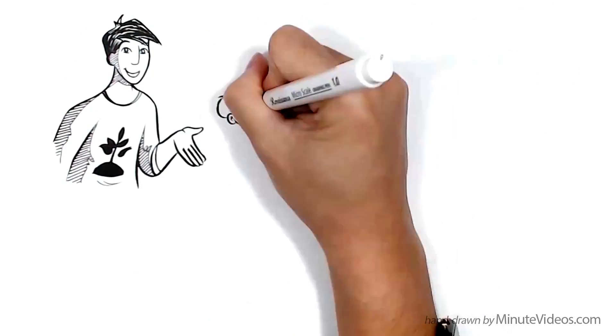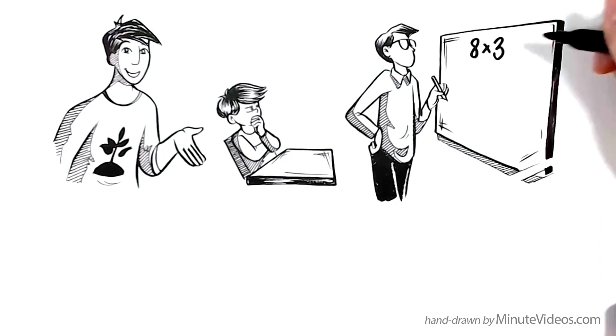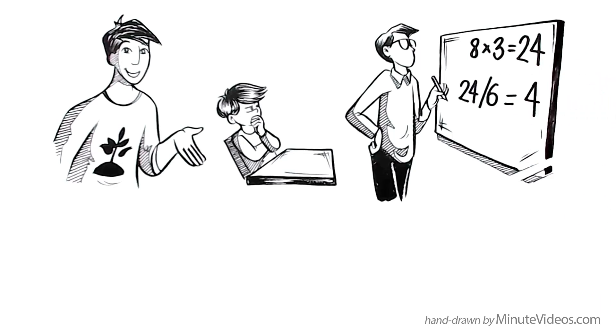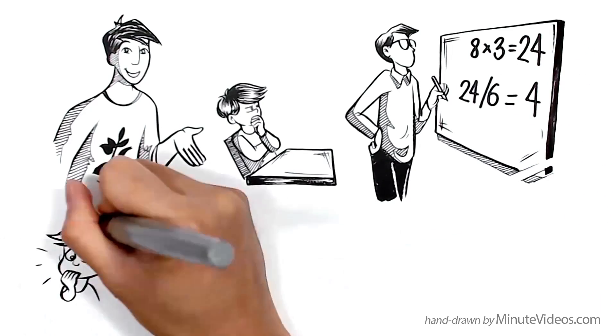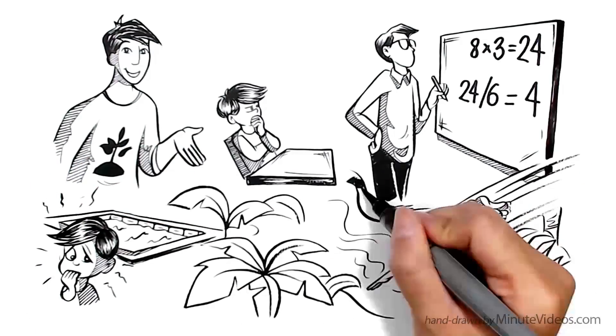What do you think? Does it make sense to teach a student who doesn't understand 8 times 3 equals 24 how 1 sixth of 24 equals 4? It's almost like saying, you don't know how to swim in a pool? What the heck? Try and jump into that river.